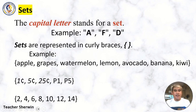Example: set {apple, grapes, watermelon, lemon, avocado, banana, kiwi}. Set {1¢, 5¢, 25¢, 1 peso, 5 pesos}. Another set {2, 4, 6, 8, 10, 12, 14}. So this is how we use the curly braces and this is how capital letter is used for a set.